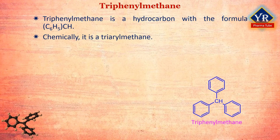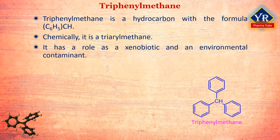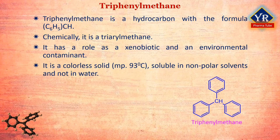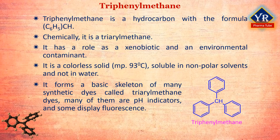Triphenylmethane is a hydrocarbon with the formula (C6H5)3CH. It is a triarylmethane in which the three aryl groups are phenyl. It has a role as a xenobiotic and an environmental contaminant. This colorless crystalline solid has a melting point of 93 degrees centigrade. It is soluble in non-polar organic solvents but not in water, and it is the basic skeleton of many synthetic dyes called triarylmethane dyes.